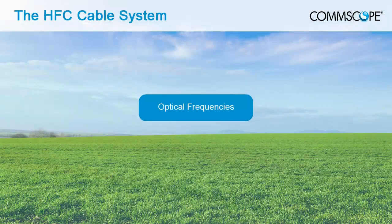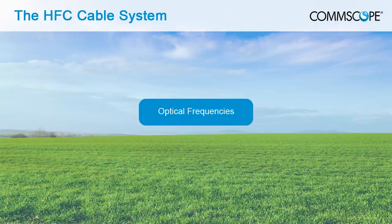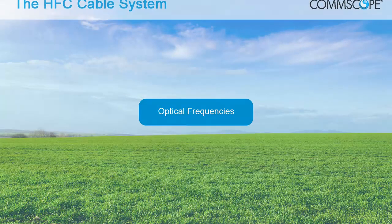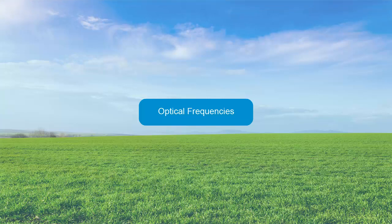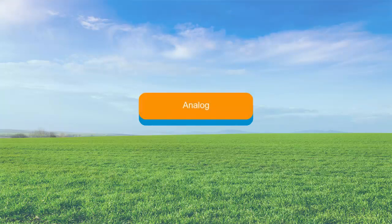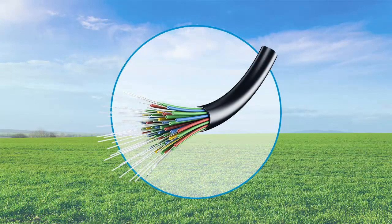Similar to RF, optical frequencies alone do not carry any information. They must be modulated by other information first, in either analog or digital form, to become carriers. Cable telecom operators have aggressively pursued using the transmission of optical frequencies over fiber optics to increase system bandwidth and reliability.